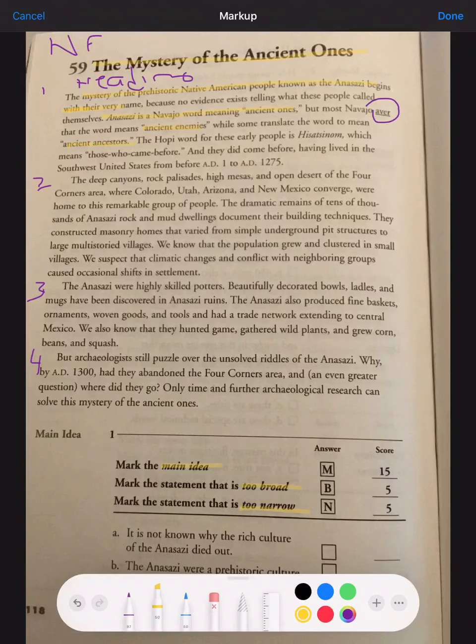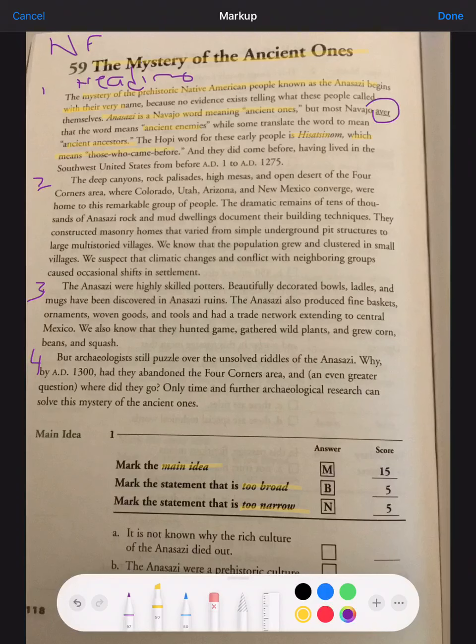The Hopi word for these early people is Hisatsinom, which means those who came before. And they did come before, having lived in the southwest United States before AD 1 to AD 1275.